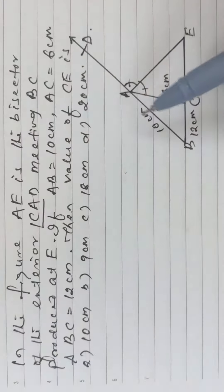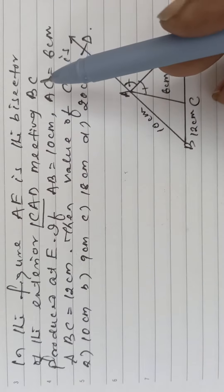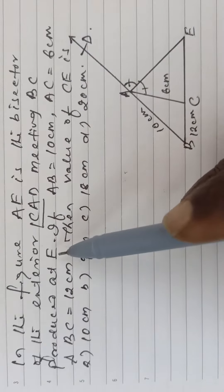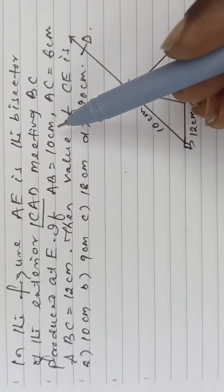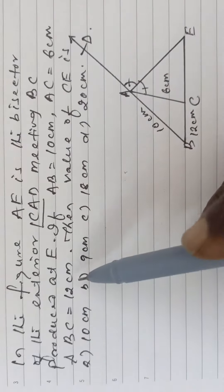In the figure, AE is the bisector of the exterior angle CAD meeting BC produced at E. If AB is equal to 10 cm, AC is 6 cm, and BC is 12 cm, then find the value of CE.